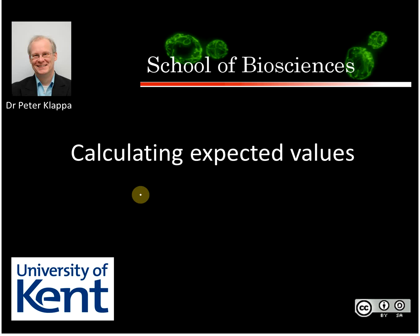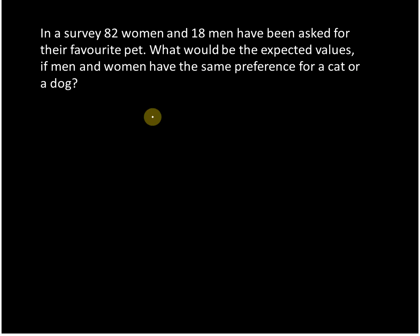The easiest way is to explain that with a simple example. We surveyed 82 women and 18 men and they have been asked for their favorite pets. We want to know what is the expected value if men and women have the same preference for a cat or a dog.